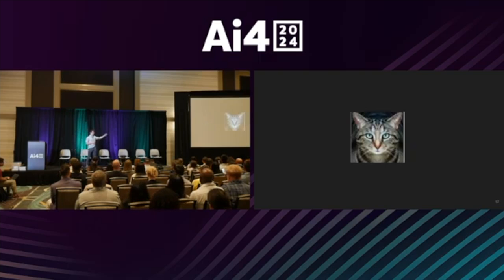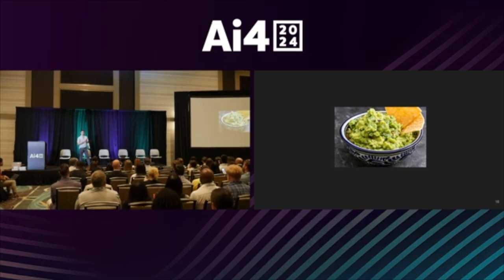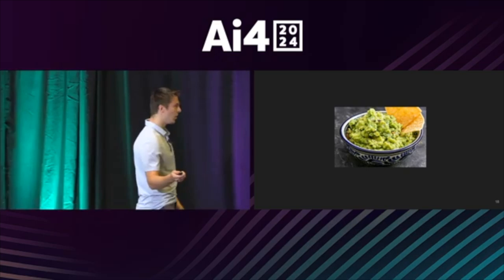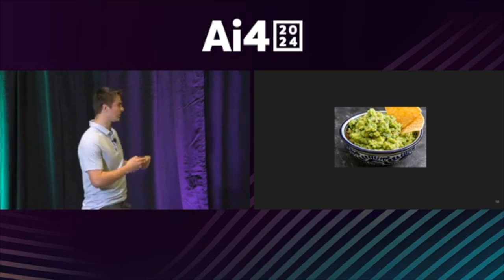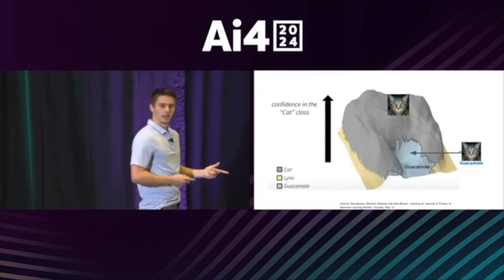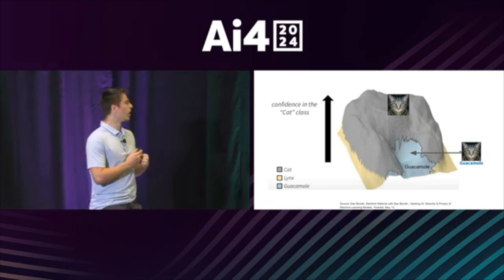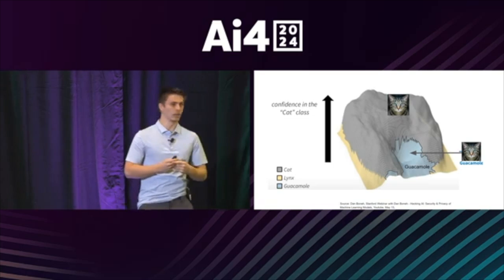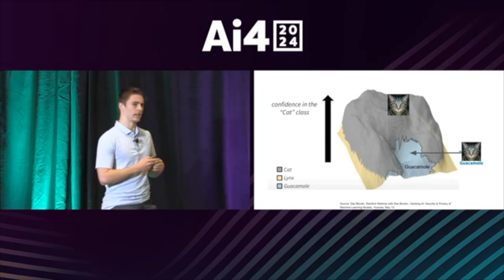That cat you all recognized earlier — the AI thought it was guacamole. I'm fairly confident no one here thought that image of a cat was guacamole, and 100% sure no one thought there were 19 different ways that image looked just like guacamole. But the AI did. Dan and his team at Stanford showed there are on average 19 different ways to change an image in a way that's imperceptible to humans but causes the AI to get it wrong.